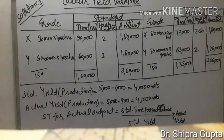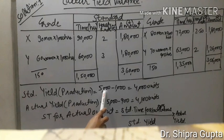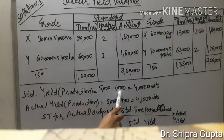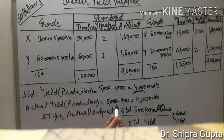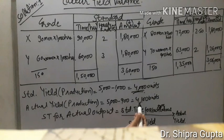For standard production, 20% loss rate is given. Total units production is 5000, and 20% is the loss. So we deduct 5000 × 20/100 = 1000 units as loss. Remaining units (standard yield) = 4000. For actual yield: 5000 total units minus 900 units loss gives remaining units of 4100.